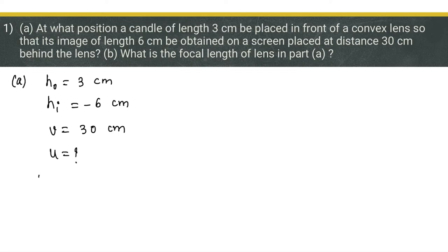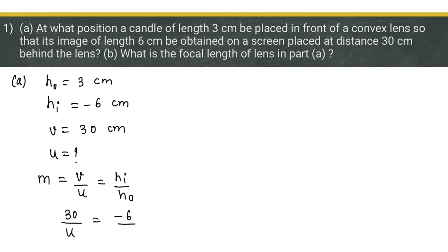We can use the magnification formula: m = v/u = hi/ho. Substituting the values with appropriate sign convention: v = 30, hi = -6, ho = 3. So u = -30/2, which gives u = -15 centimeters. This means the object is 15 centimeters from the lens on the left-hand side.